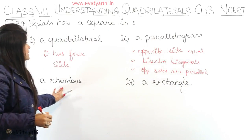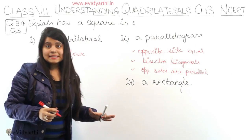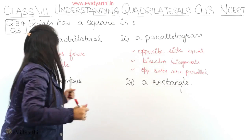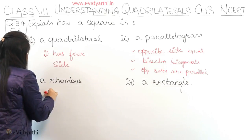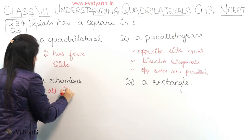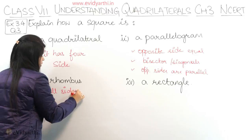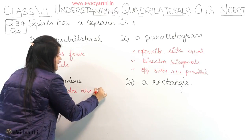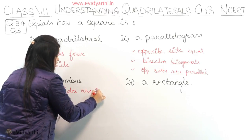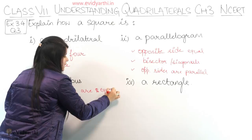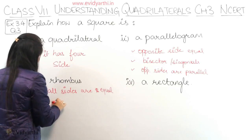Next we have why a square can be said to be a rhombus. Because all sides are equal. Rhombus की भी सारी sides equal होती हैं, और square की भी सारी sides equal होती हैं.